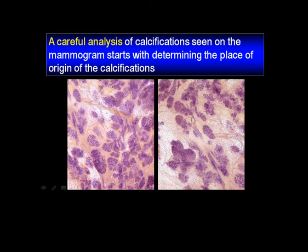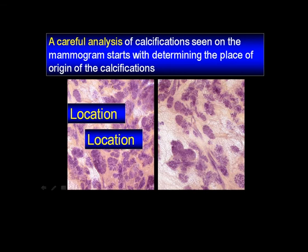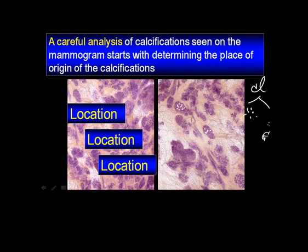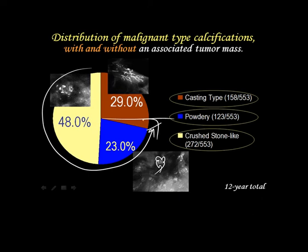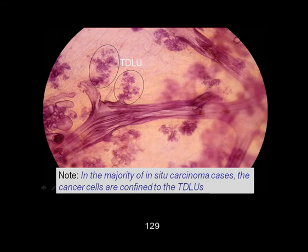If we were running a calcification analysis course, you would immediately magnify and take the magnifying glass and look at the shape and the density. Nothing wrong with that, but it's the wrong order. You have to decide whether it's coming from the TDLU or from the duct, and it's very simple. Because if it's cluster calcification, then there are only two options — discernible and non-discernible. This is a grade one and this is a grade two. But it's not DCIS. The in situ carcinoma within the duct is long and Y-shaped. This is the most frequent — 50%. And 75% versus 25% — 25% of in situ actually originate from the TDLU, but pathologists always call them DCIS.